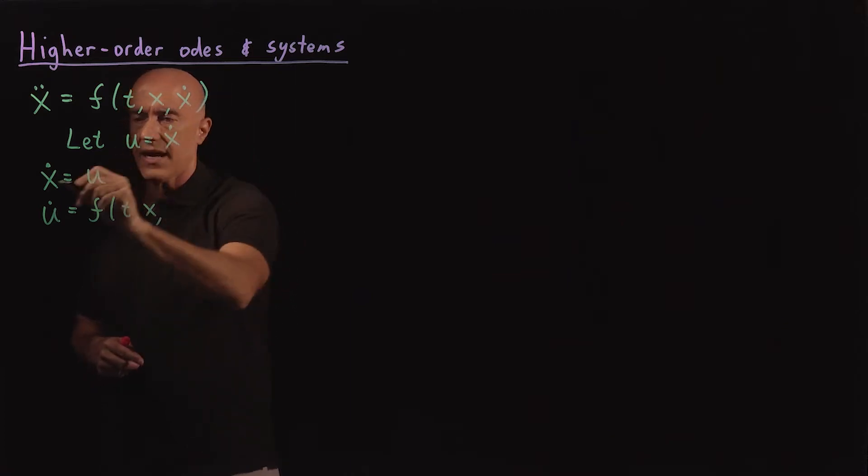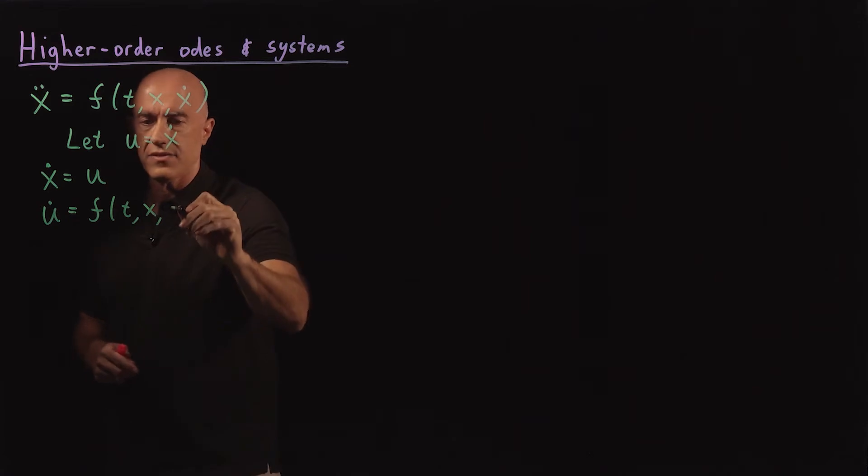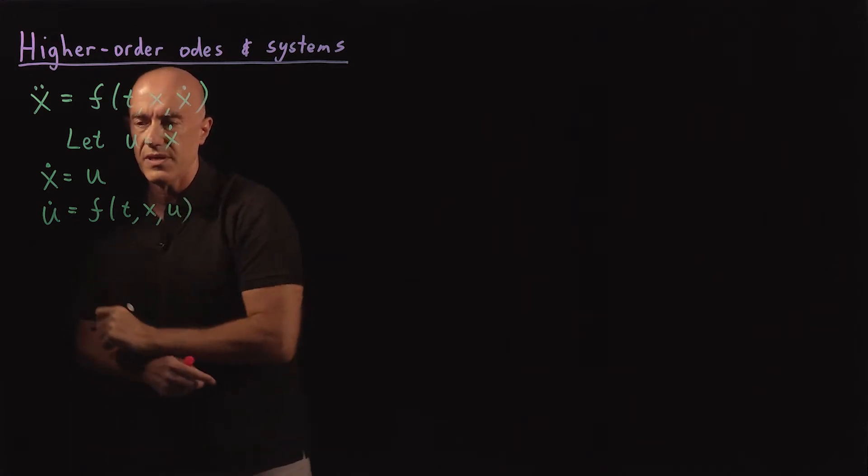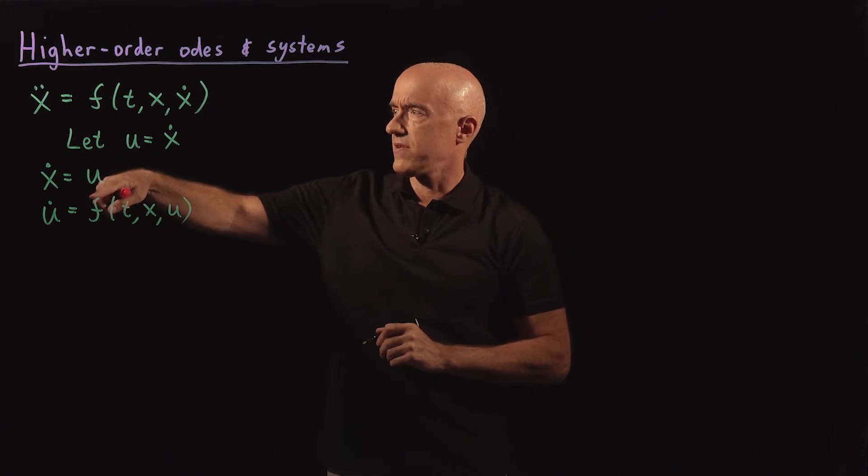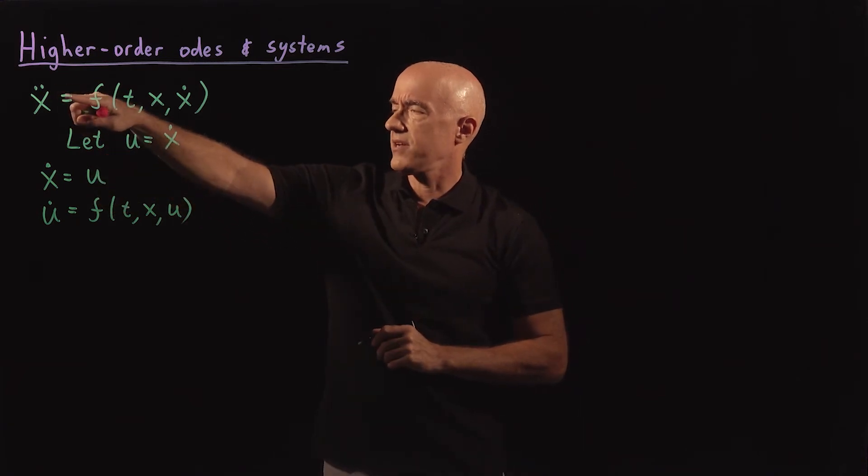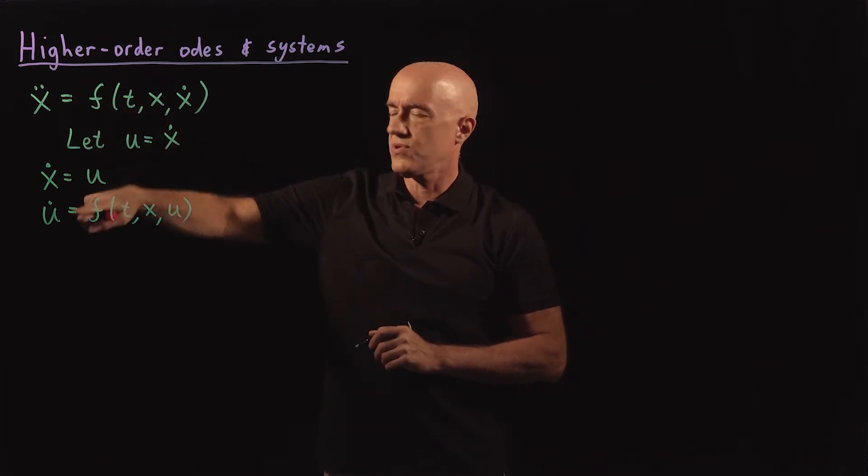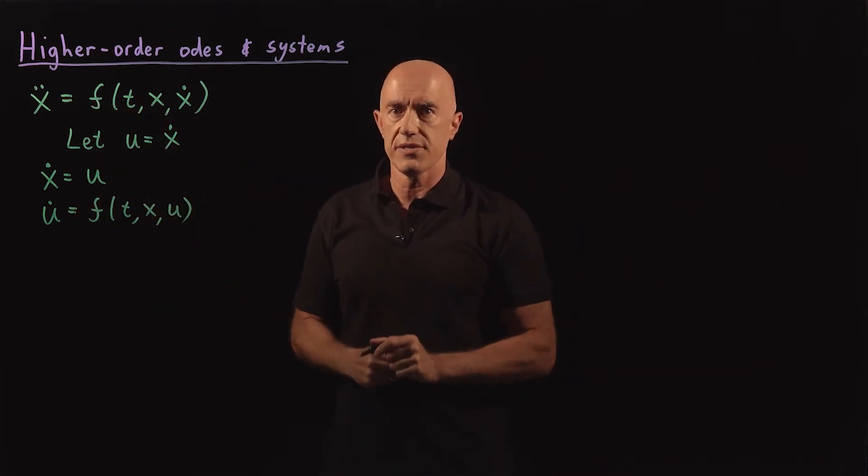And then instead of x dot here, we already defined x dot to be u, so that would be u. So this would be converting a single second-order differential equation into two first-order equations.